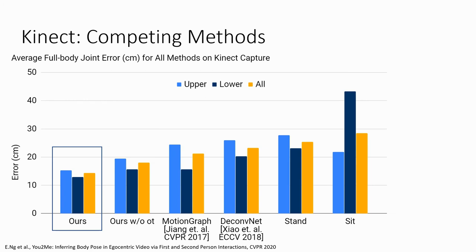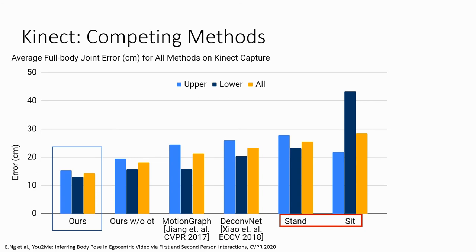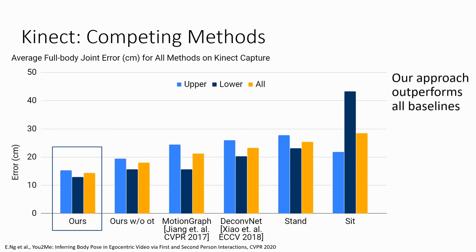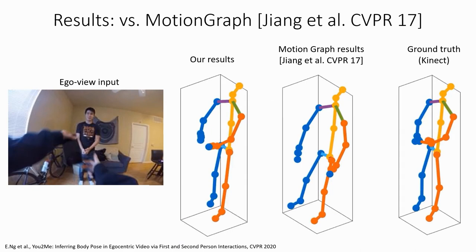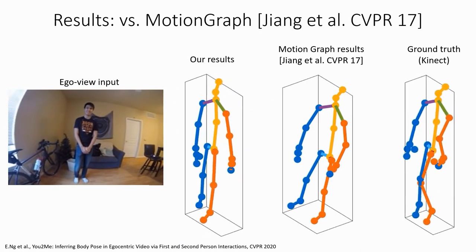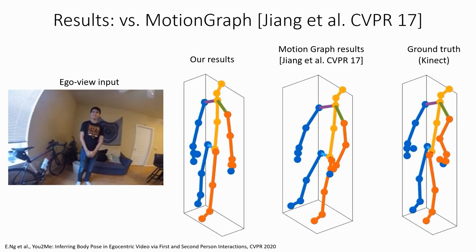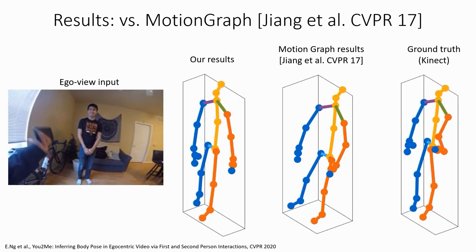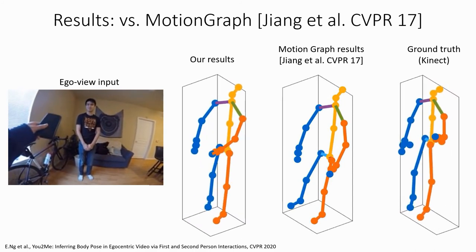Quantitatively, our approach outperforms current state-of-the-art for ego pose estimation, a state-of-the-art third-person approach adapted to the first-person setting, and a stronger-than-random guessing baseline. All quantitative results are also demonstrated separately in the Panoptic setting. As opposed to current state-of-the-art, our approach successfully predicts gestural upper body movements of the camera wearer.